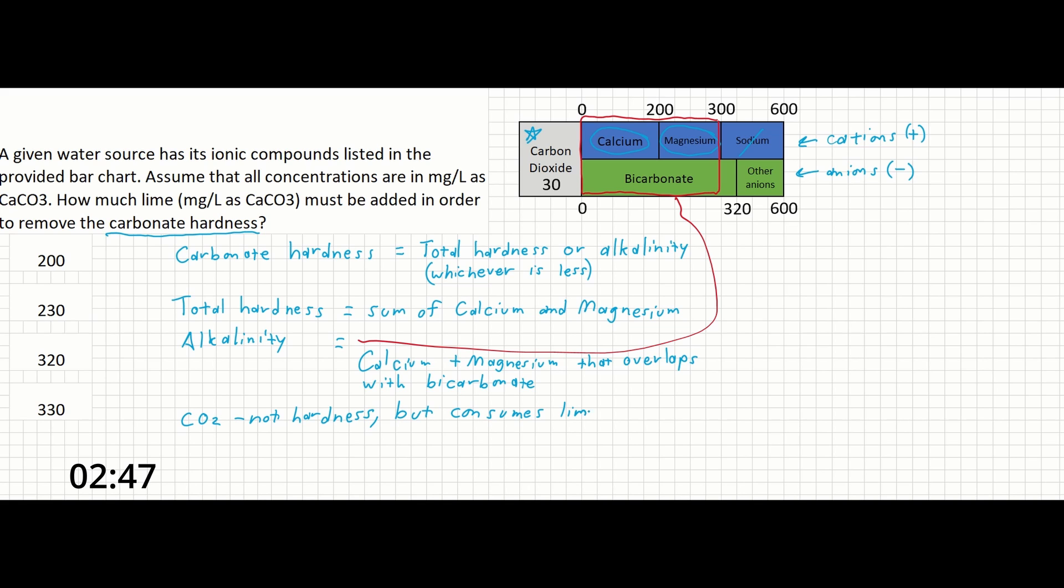The lime needed is going to be the sum of the CO2 and the hardness from calcium and magnesium, or 300 plus 30 from the bar chart. If you wanted to get technical, it is 200 from the calcium, 100 from the magnesium, and 30 from the carbon dioxide, giving us 330.